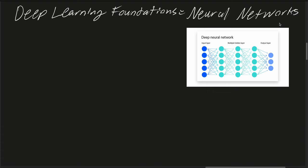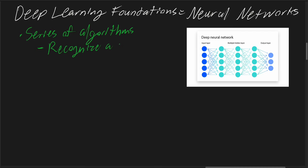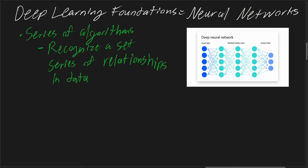At their core, neural networks are a series of algorithms that strive to recognize underlying relationships in a set of data, through a process that mimics the way the human brain operates.